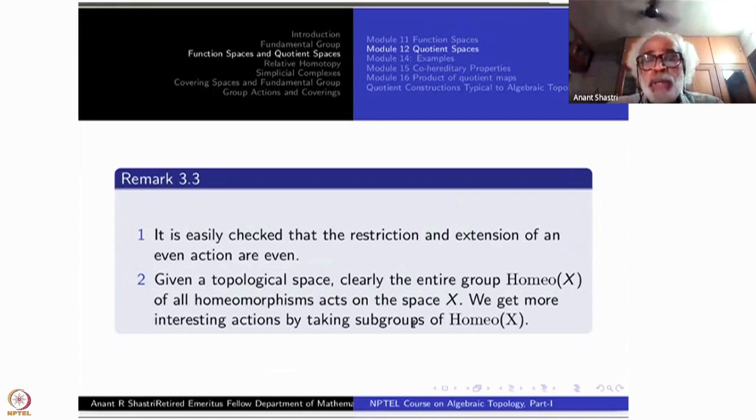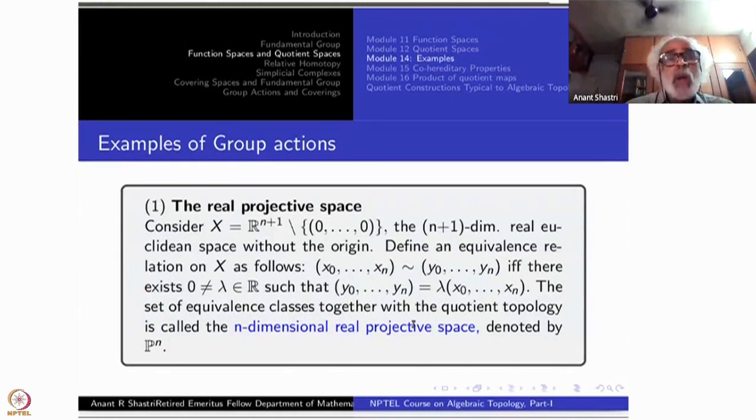Converse is not true in general. But of course, if we assume G is finite and X is Hausdorff, this is an easy exercise. It is easily checked that restriction and extension of an even action are even. Given a topological space, this entire group of homeomorphisms acts on spaces. We get more interesting actions by taking subgroups. The action of homeomorphisms on a topological space, you don't have to define it. It is there. Which subgroup you take will define the symmetry of X. Let us stop here and next time we will see examples.